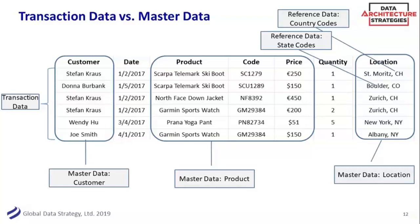That's where master data can be the unsung boring hero — getting country codes right, whether it's CH or CO, is maybe not the most exciting part of one's job, but you can't do the sexy stuff like data science and advanced analytics if you don't have that right. Are we talking about countries or states? Are we talking about locations where the person lives or where they bought the jacket? They're very different things.